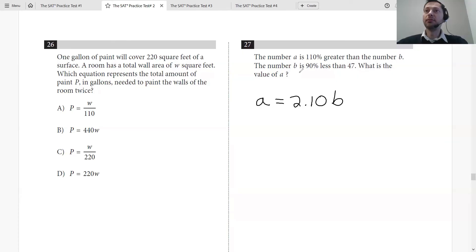Now they're saying the number B is 90% less than 47. So for 90% less, you'd multiply by 0.10. So B equals 0.10 times 47, which is 4.7. So we know B is 4.7.